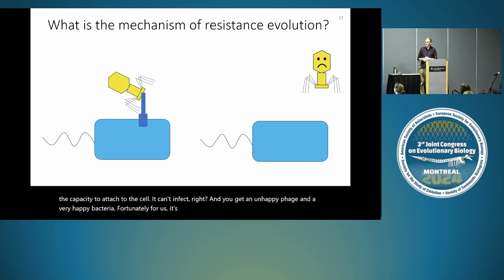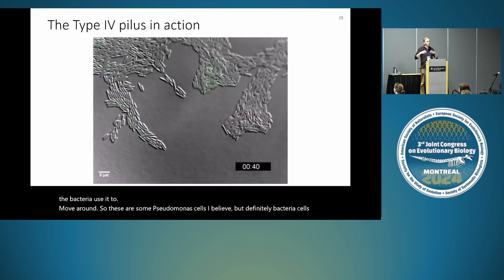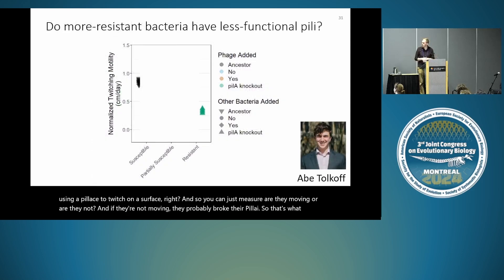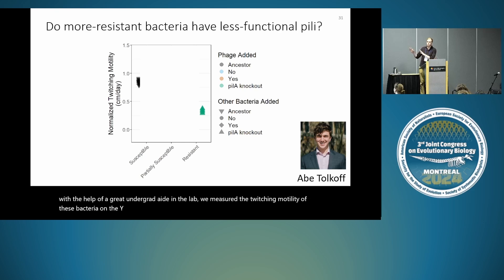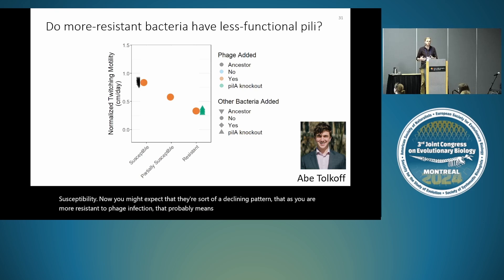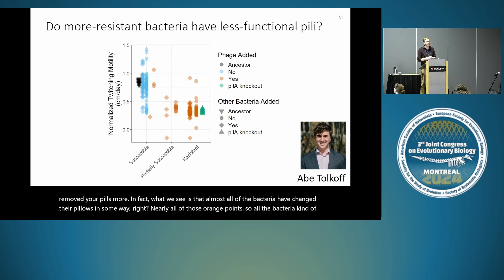Fortunately, it's easy to measure the pilus because the bacteria use it to move around. These bacteria cells are using a pilus to twitch on a surface — so you can just measure whether they're moving or not; if they're not moving, they probably broke their pili. We measured the twitching motility of these bacteria on the y-axis, plotting it based on whether the bacteria was susceptible, partially susceptible, or resistant in our phage susceptibility assays. Nearly all of the orange points — bacteria evolving in the phage-added population — have mutations that altered their pilus function for moving across surfaces.